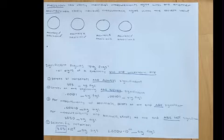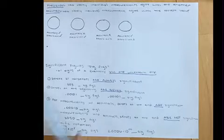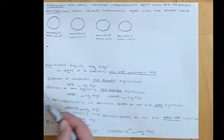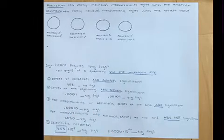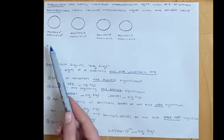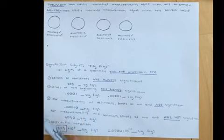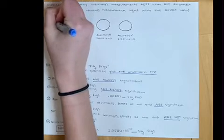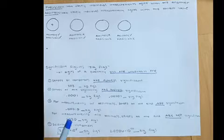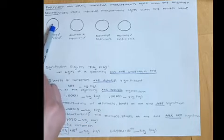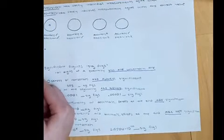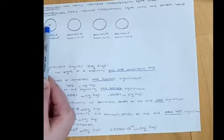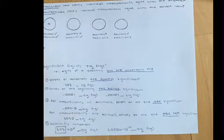Using a target to model this: high precision and high accuracy means all values would be very close to the bullseye or target, because all of them are close to one another and close to the correct value.